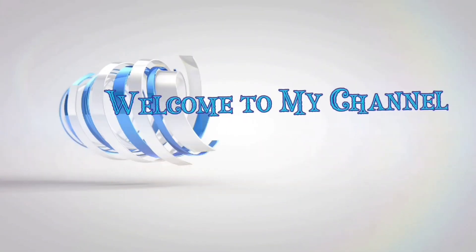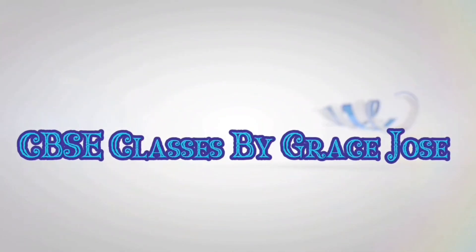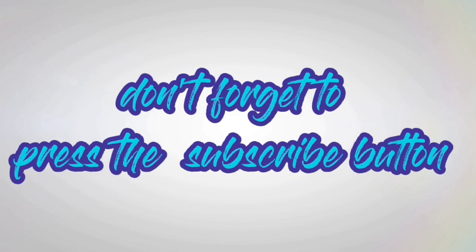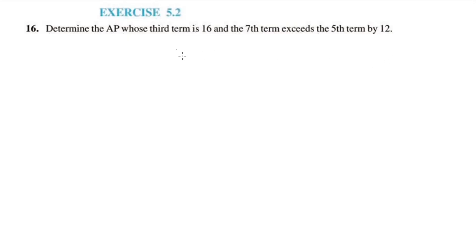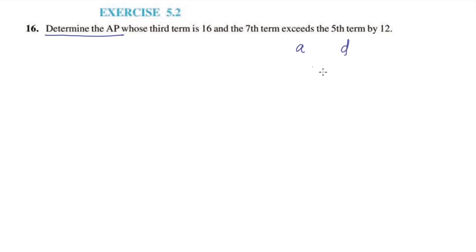This is Exercise 5.2, Question Number 16. Determine the AP whose third term is 16 and the seventh term exceeds the fifth term by 12. How do we determine the AP — how do we find the first term and common difference in this case?